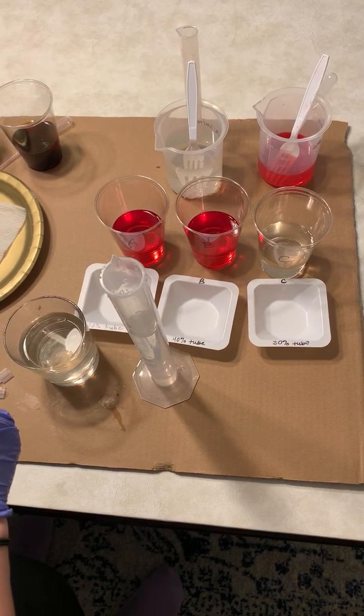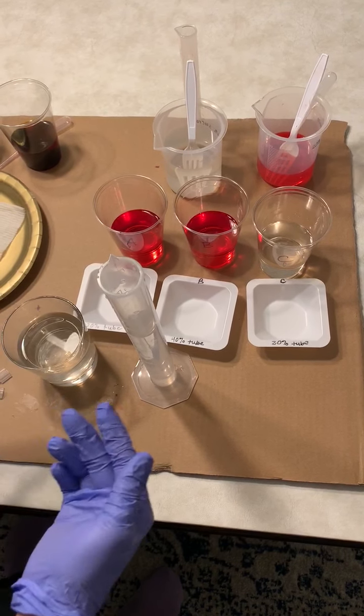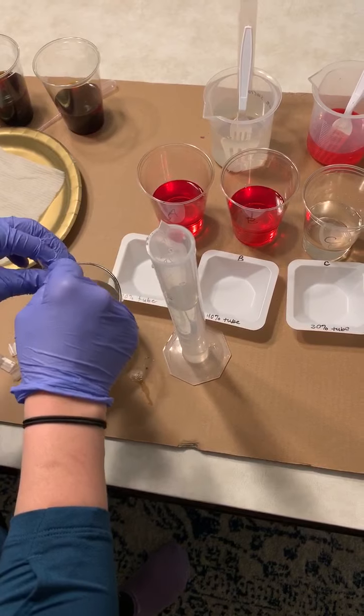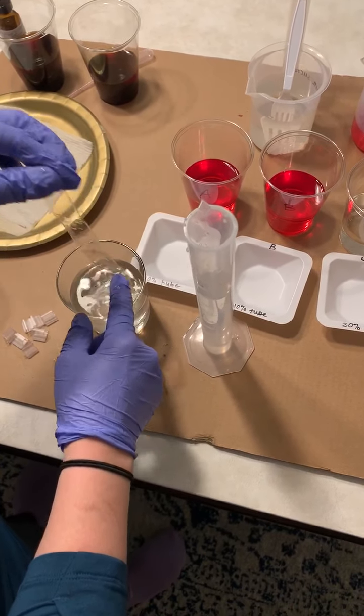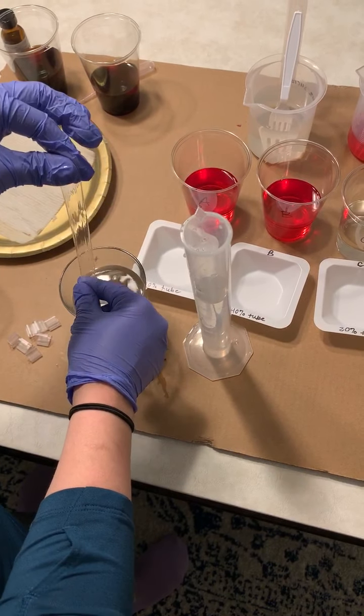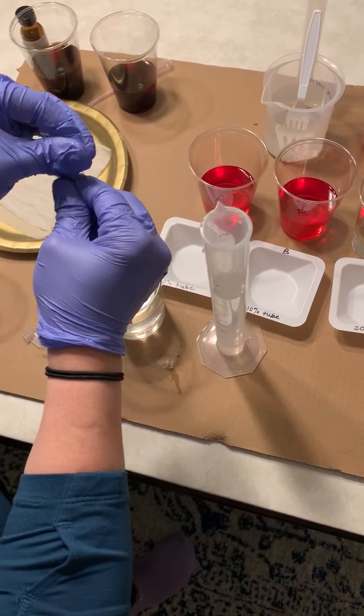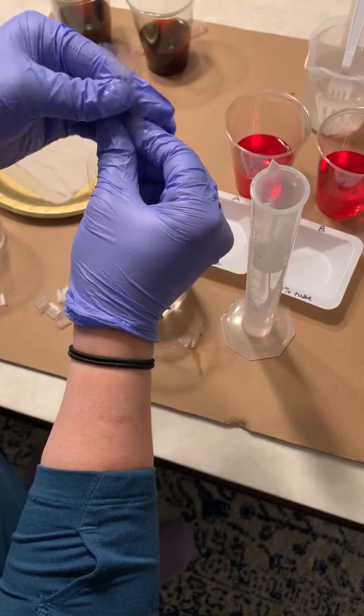All right, so now I'm demonstrating activity number two. This is going to be looking at osmosis, and we're going to be using these things called dialysis tubes, and these are to represent the semi-permeable membrane. So my tubes have been soaking in water for about a minute, and they're going to be nice and wet, and what you're going to be doing is you're going to try to dislodge the two sides of the membrane from each other.